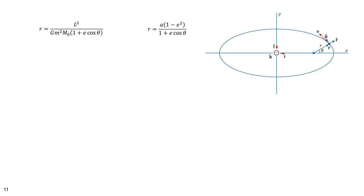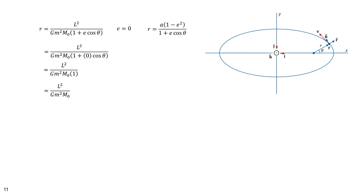I said that eccentricity e is greater than zero, but it could equal zero. Let's consider the case where e equals 0. Substituting zero for e in the equation, the denominator becomes 1 plus 0, which is 1, so r equals L²/(Gm·m²·m₀) — a constant. If r is constant regardless of theta, it results in an ellipse with constant radius, which is a circle. The angular momentum L, gravitational constant G, mass of orbiting body m, and mass of central body m₀ are all constant. So if e equals 0, r is a constant circular radius — this is uniform circular motion.